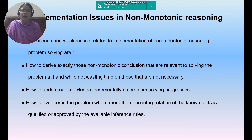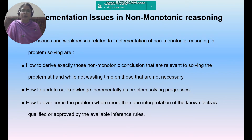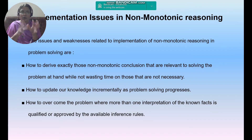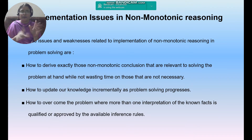There are some important implementation issues for non-monotonic reasoning. The first one is how to derive exactly those non-monotonic conclusions that are relevant to solving the problem at hand, without wasting time on unnecessary ones. We have multiple inference rules, but only some facts are used for deriving our own knowledge, so we should take only the relevant things.